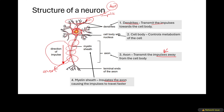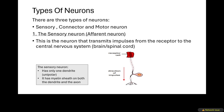The myelin sheath insulates the axon, causing the impulses to travel faster. For example, when you are touching a hot stove you pull your hand away quickly — the message arrives at the central nervous system very fast. What makes it move faster is the myelin sheath that insulates the axon.